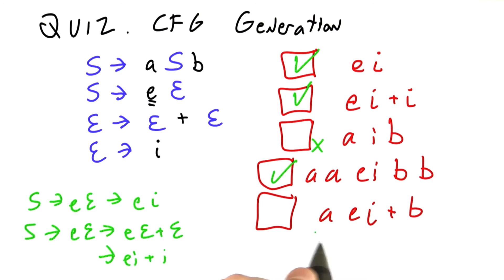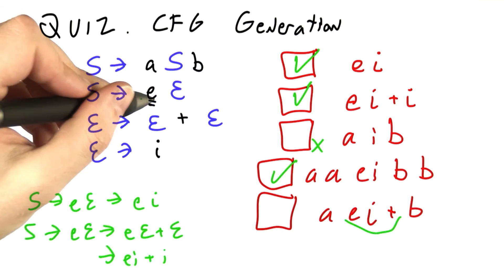Over here I've got the A and the B around it. You'll note that these A's and B's follow the same balanced parenthesis pattern we've been doing before. The real question is whether EI plus can be generated from S.